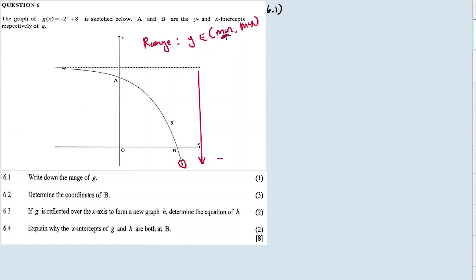It's negative infinity to Y equal to the asymptote of this, the horizontal asymptote. The exponential function has a horizontal asymptote, and the horizontal asymptote is always this value, which is equal to 8. Y is equal to 8. So therefore, our range is Y element of minus infinity to positive 8.